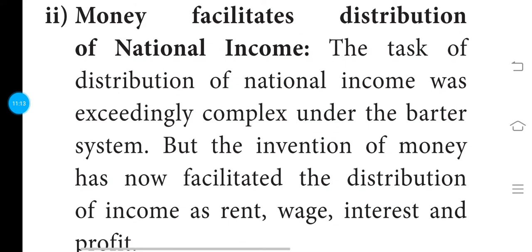The task of distribution of national income was exceedingly complex under the barter system. With money, we can pay for the factors of production: we can pay for land, wages, interest, and business partners — that is the distribution.